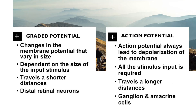Graded and action potential: the changes in the membrane potential can be in graded potential or action potential. Graded potential is the change in membrane potential that varies in size depending on the size of the stimulus. Action potential is a change in membrane potential that does not vary with the size of the stimulus — the stimulus must be adequate or no change will occur. Graded potential travels shorter distances and occurs in distal retinal neurons such as photoreceptors, bipolar cells, and horizontal cells. Action potential, on the other hand, travels longer distances and occurs in ganglion cells and amacrine cells.